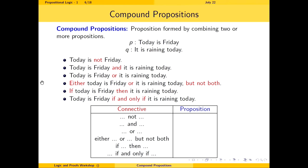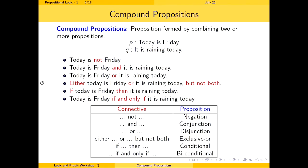Each compound proposition is named by its connective. If it contains 'not,' it's a negation. If it contains 'and,' it's a conjunction. If it contains 'or,' it's a disjunction. If it contains 'either...or...but not both,' it's an exclusive OR proposition. If it uses 'if...then,' it's a conditional proposition. And if it uses 'if and only if,' it's a biconditional proposition.